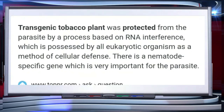A nematode, Meloidogyne incognita, infects the roots of tobacco plants, which reduces the production of tobacco. A transgenic tobacco plant was protected from this parasite by a process based on RNA interference, which is possessed by all eukaryotic organisms as a method of cellular defense.